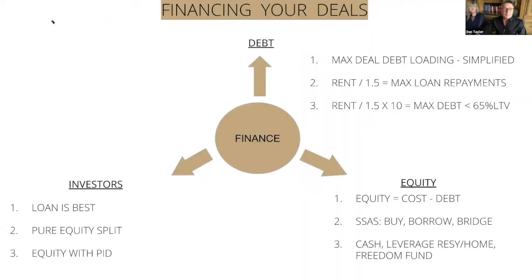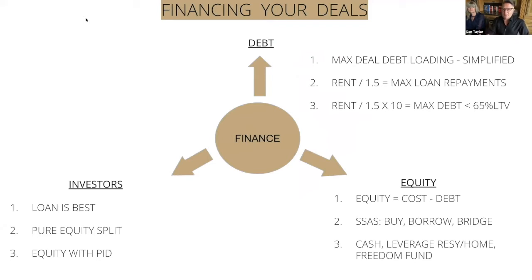In terms of financing deals, there's really one thing: money. That money is split into two sections — debt and equity. Debt only goes so far, so in every deal predominantly there's some form of equity going into the deal. Irrelevant if you add value, there's still equity going into a deal. Now, that equity doesn't have to be yours — it can be a JV investor, somebody who doesn't have time but they have money.